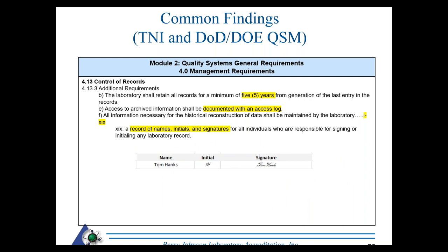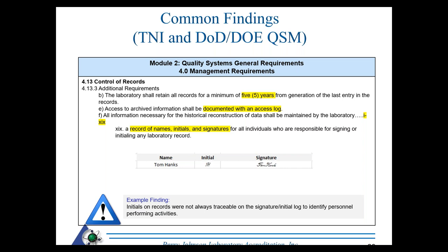TNI and the DOD/DOE QSM both require an access log for records. When assessing, we look at where records are archived and whether there is an access log. Records should also include a signature and initial log — if we can't trace who made entries in a record, that's an NCR. Be aware that signatures and initials can change over time; one approach is to capture both a careful and a sloppy initial so they're traceable regardless of writing speed.